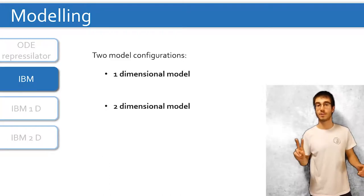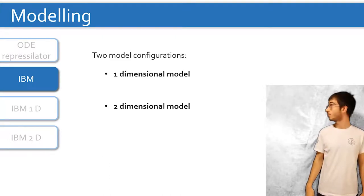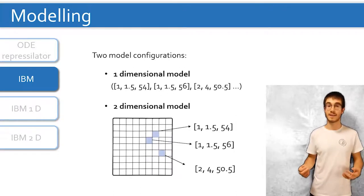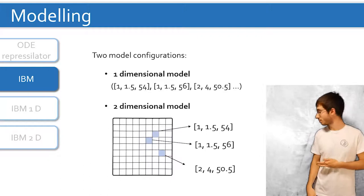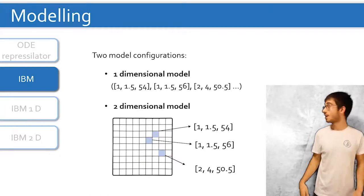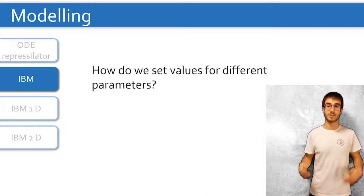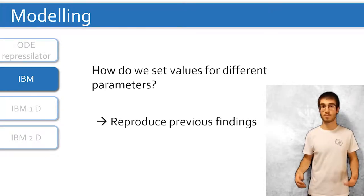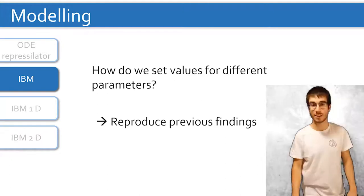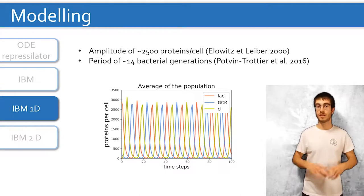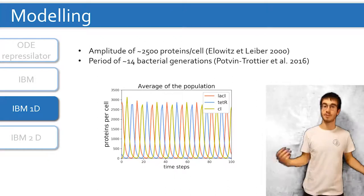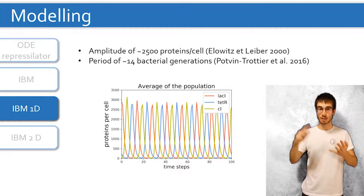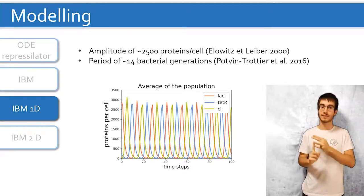We consider two different configurations for this model. One dimension, where bacteria are going to be stored in a list, or two dimensions, where simulated bacteria are going to occupy the specific positions of a grid. By now, the system has some parameters whose value we have to determine, and to do so we try to reproduce findings both from experiments and previous continuous models. In one dimension we could reproduce the period and the amplitude previously reported for our system, and like that we set the values for the parameters in the differential equations, and also for the integration time at each time step.